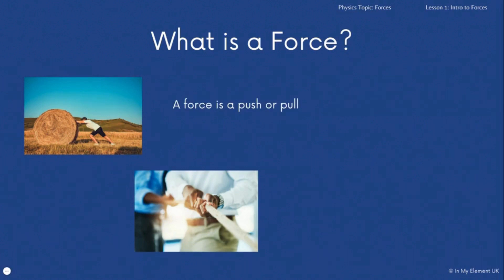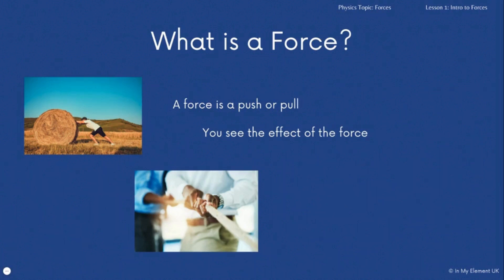Looking at these two images, a force is classed as a push or a pull. You've got the man there pushing the hay rail, and you've got the gentleman there pulling on the rope for a tug of war. You will see the effects of the force — the hay rail moving forward and the tug of war pulling people towards you.